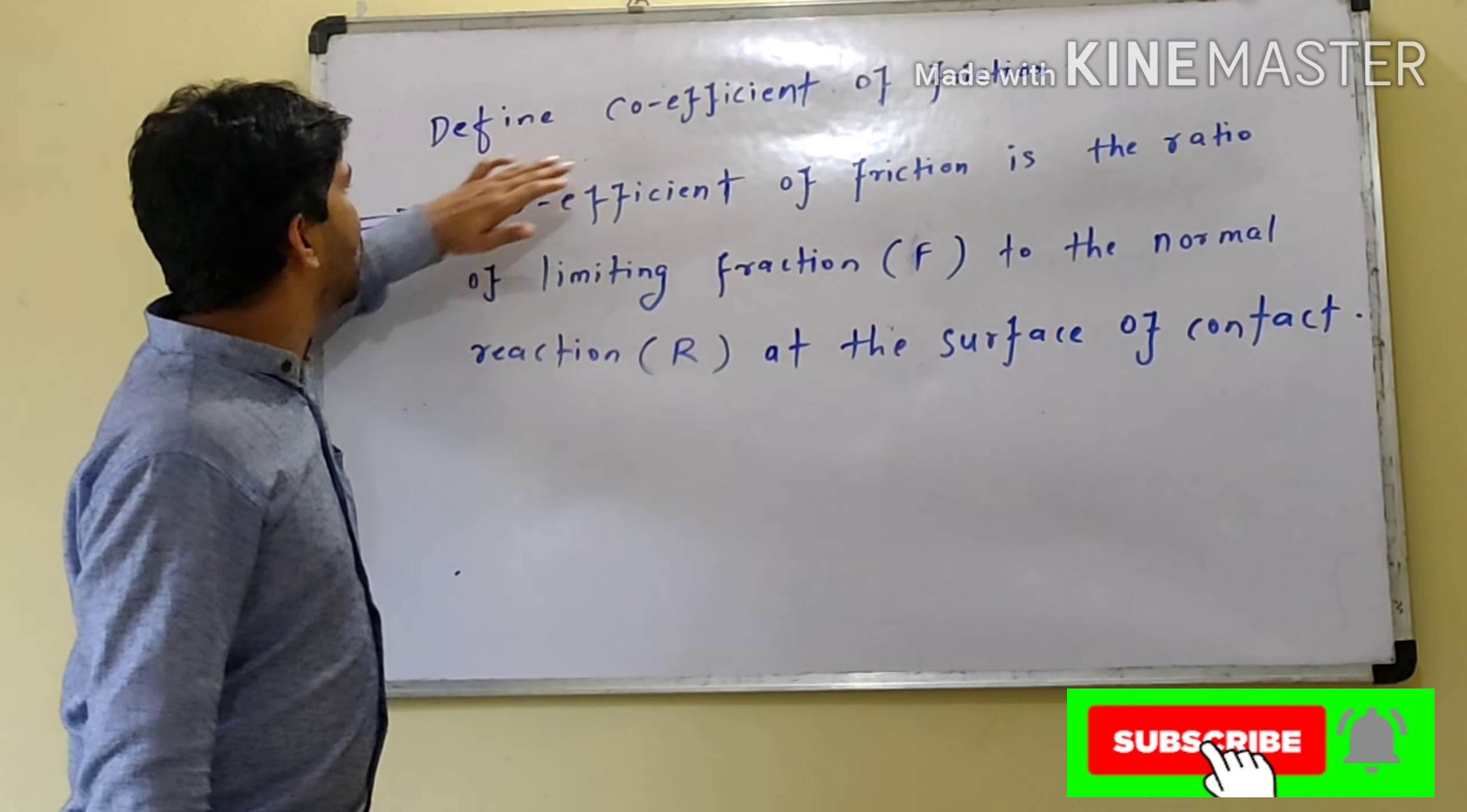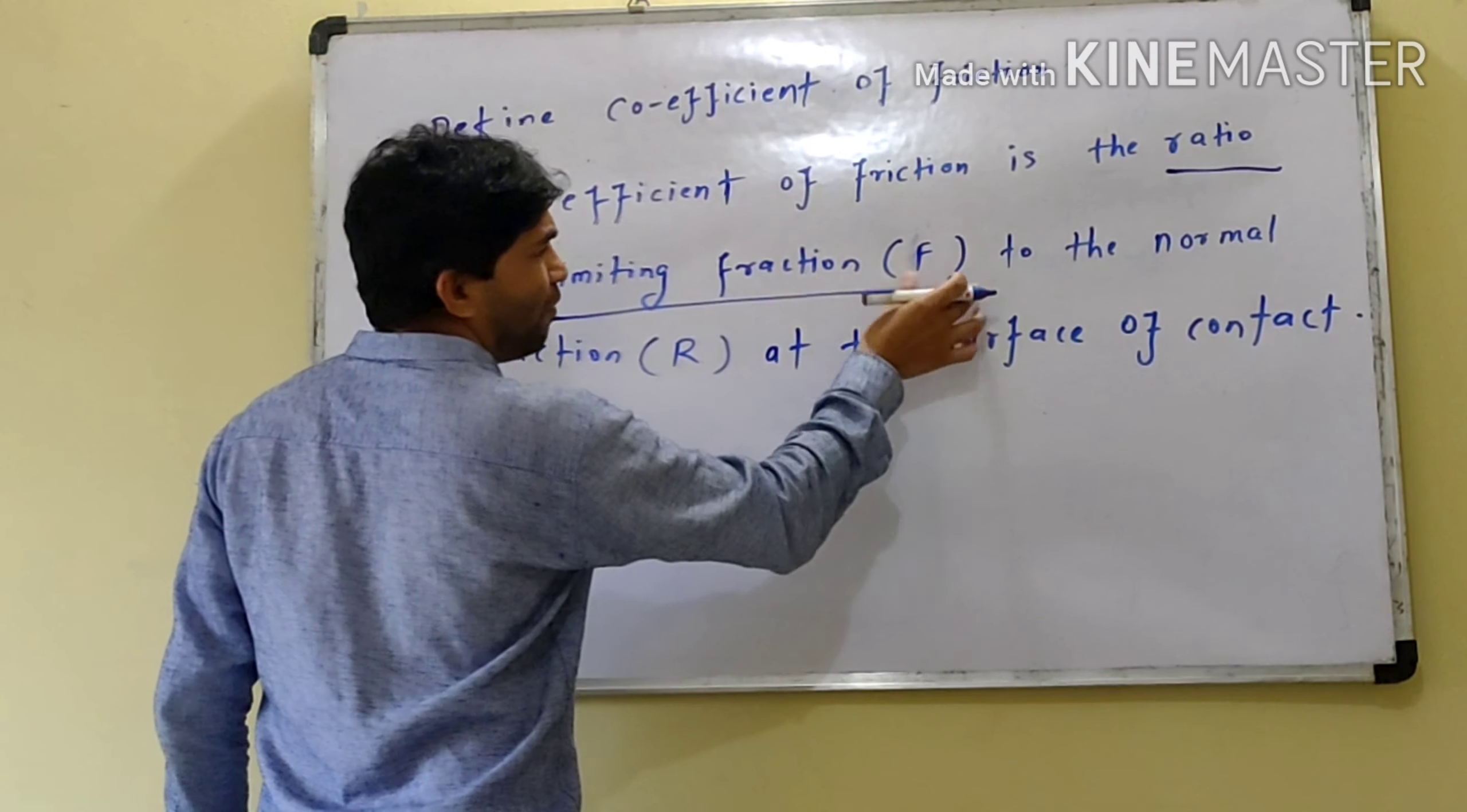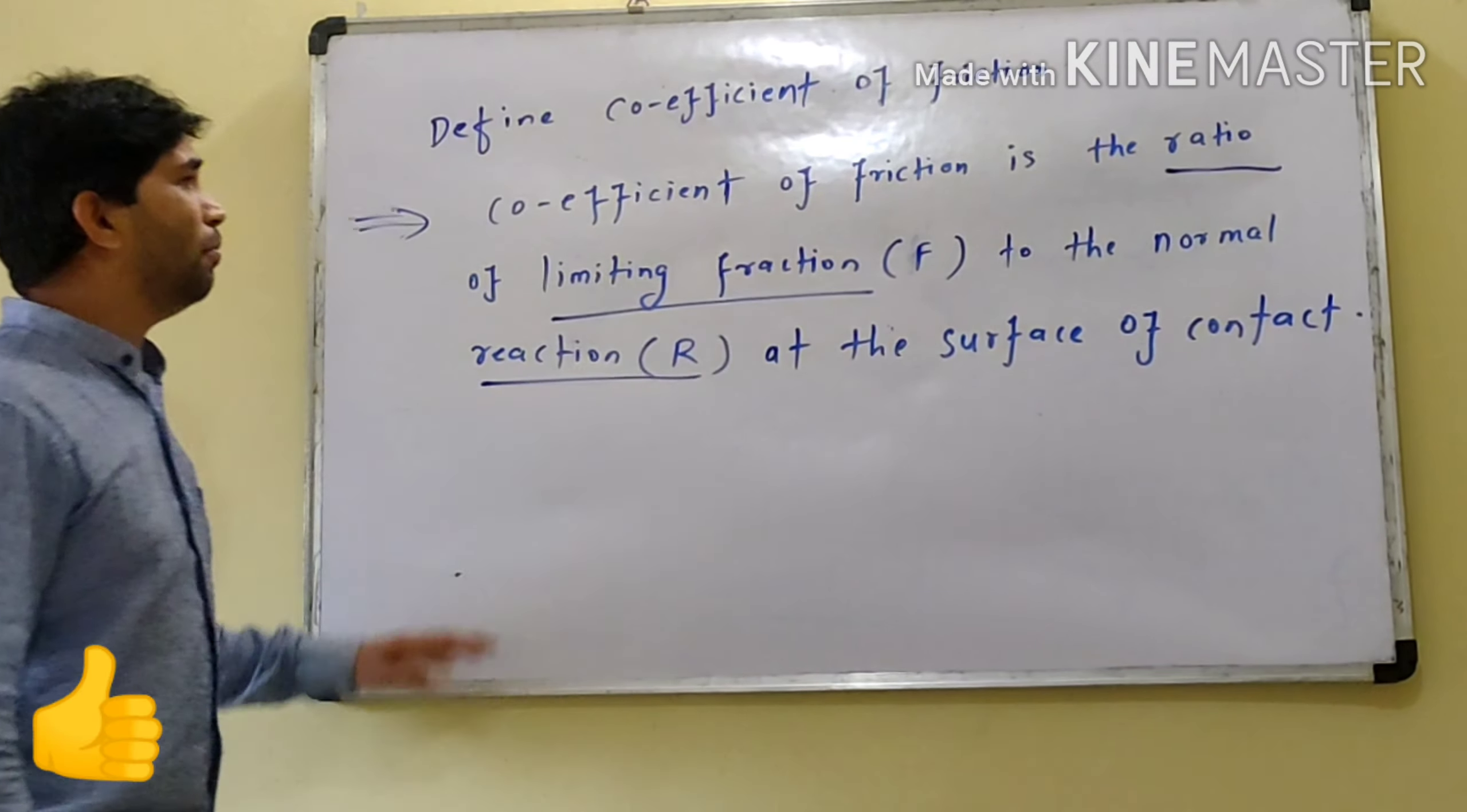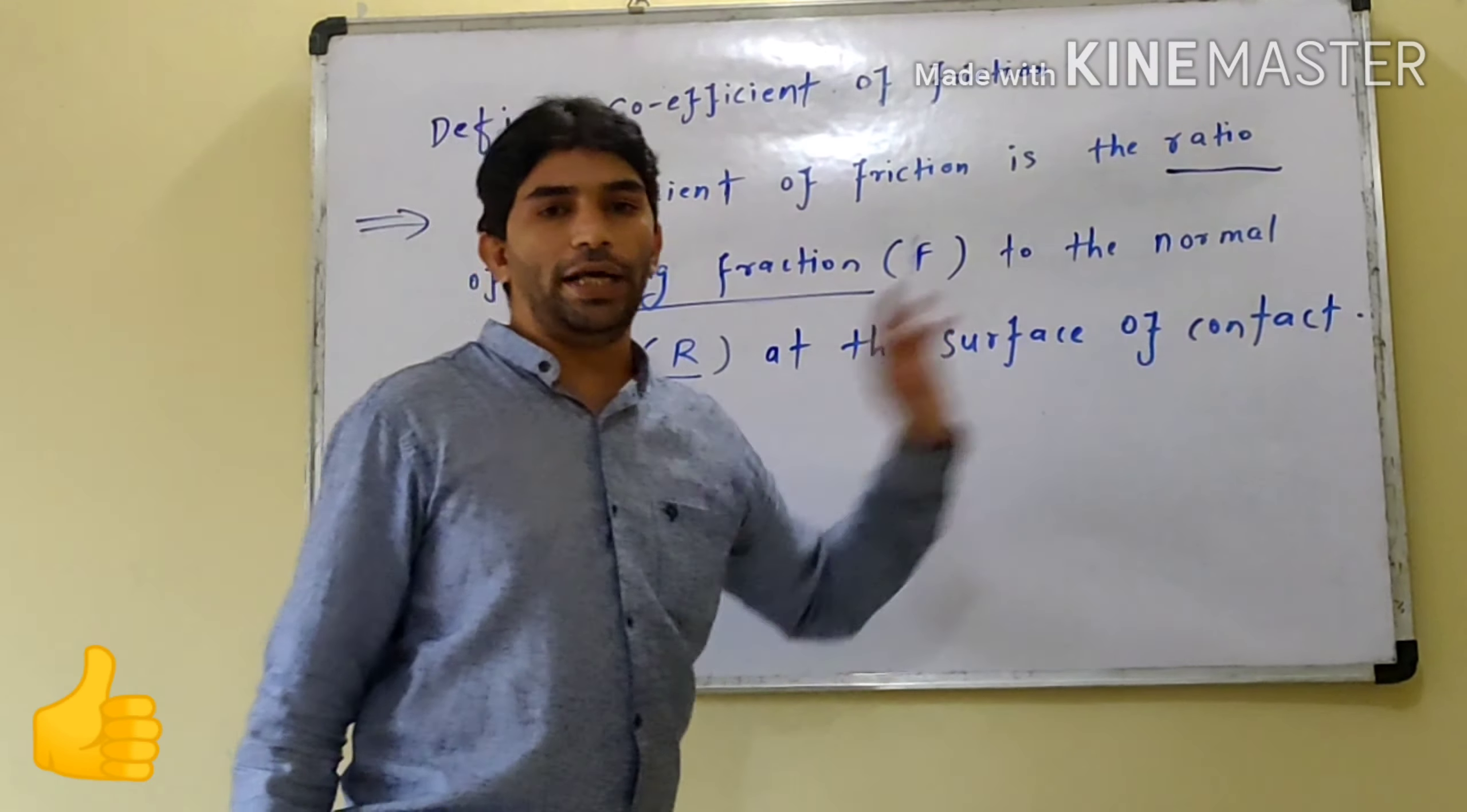So, what is the coefficient of friction? Coefficient of friction is the ratio of limiting friction, that is F, to the normal reaction R at the surface of contact. This is the ratio of limiting friction and normal reaction. This is the coefficient of friction at the surface of contact.